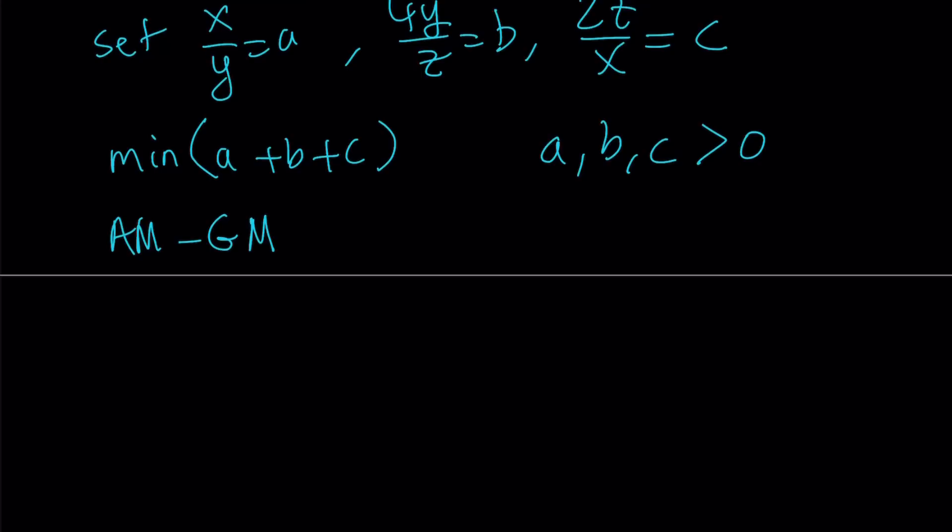Let's write down AM-GM for three positive numbers. The arithmetic mean or the average of three numbers a, b, c, is one-third of their sum. And this is always greater than or equal to the cube root of their product, which is the geometric mean. In other words, the geometric mean of n numbers is the nth root of their product. In this case, we have three numbers. Therefore, we use the cube root.